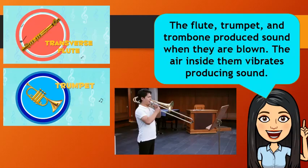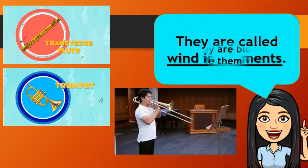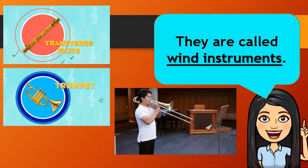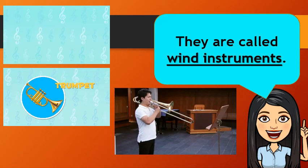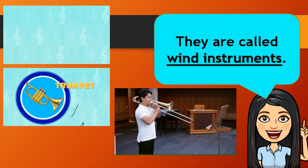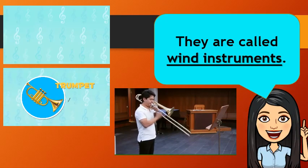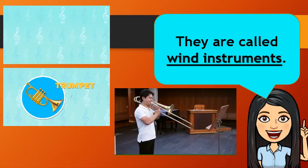The flute, trumpet, and trombone produce sound when they are blown. The air inside them vibrates, producing sound. They are called wind instruments. Wind instruments are blown so that the air column vibrates.